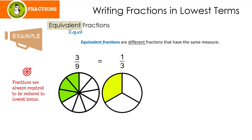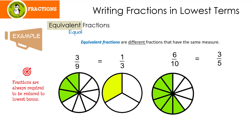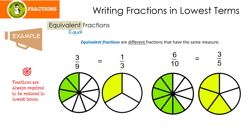Here's 3 ninths and here's 1 third. Do you notice that they take up the same amount of space? They have the same measure. Let's look at another example: 6 tenths equals 3 fifths. When I reduce 6 tenths, I have 3 fifths. Here's 6 over 10 — the 6 means the shaded parts and the 10 is the total number of parts. Here's 3 fifths: 3 parts are shaded and there's a total of 5. They have the same measure because the same parts are shaded.